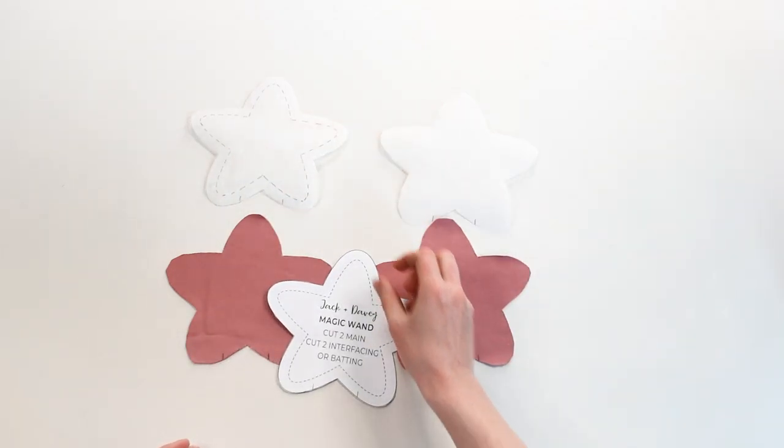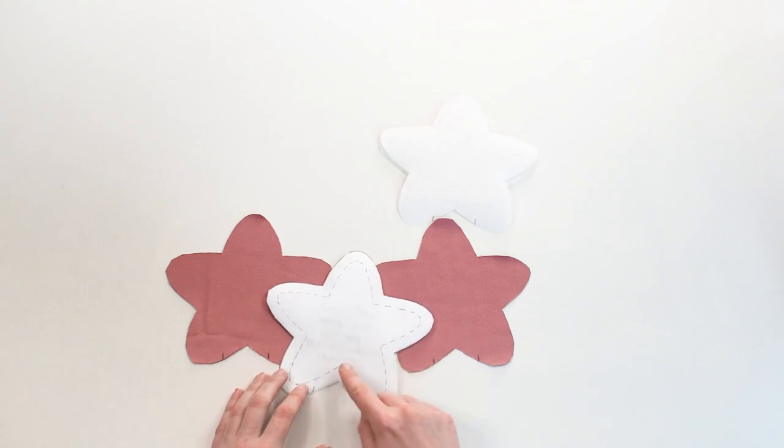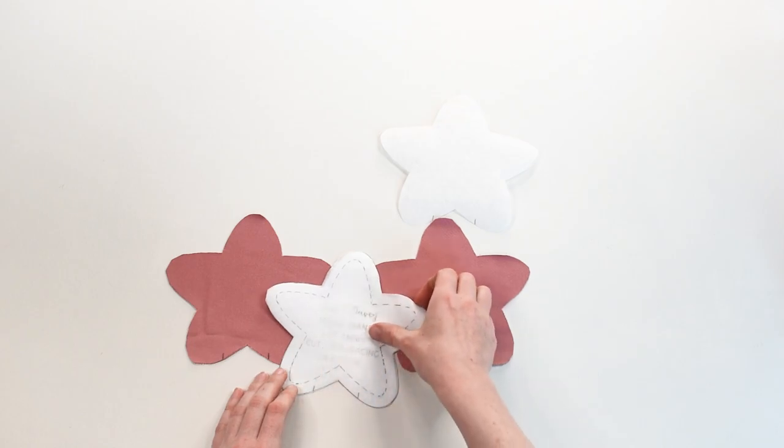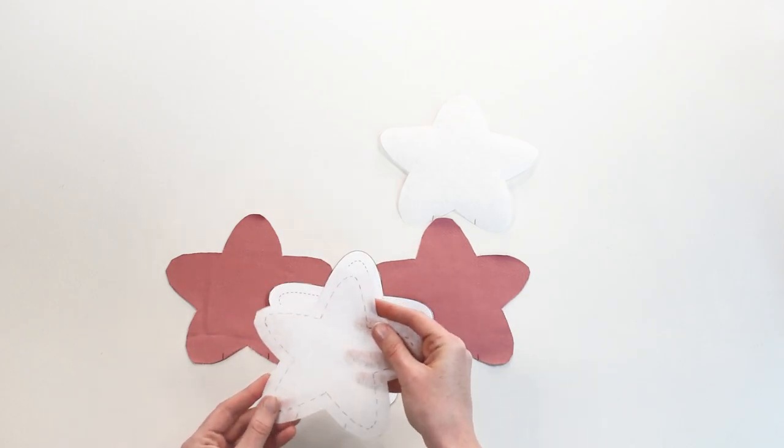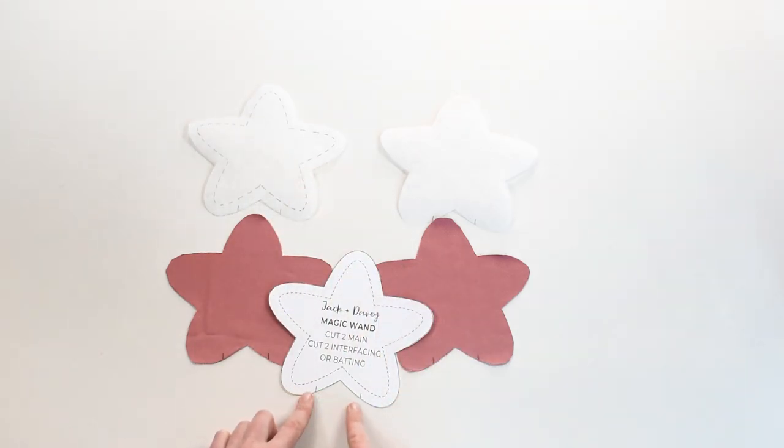Place one of the interfacing pieces over the star pattern piece and trace along the sewing line and mark two of the notches on the bottom. Then mark the notches on each piece of the star.